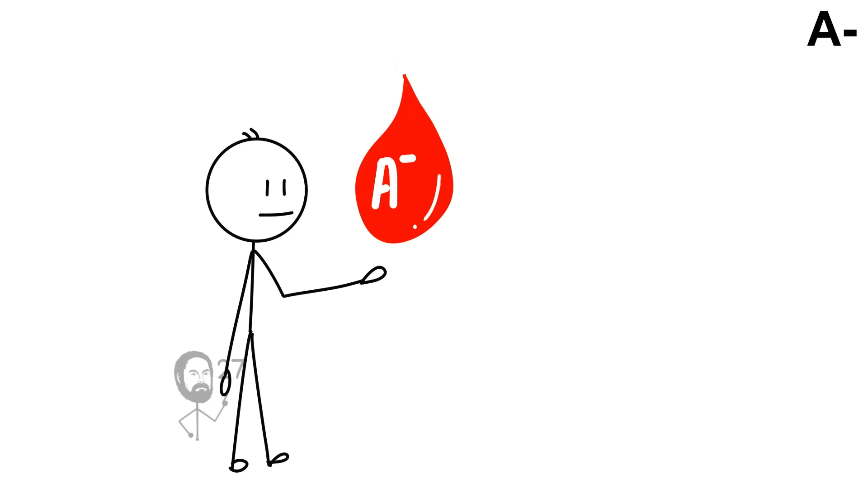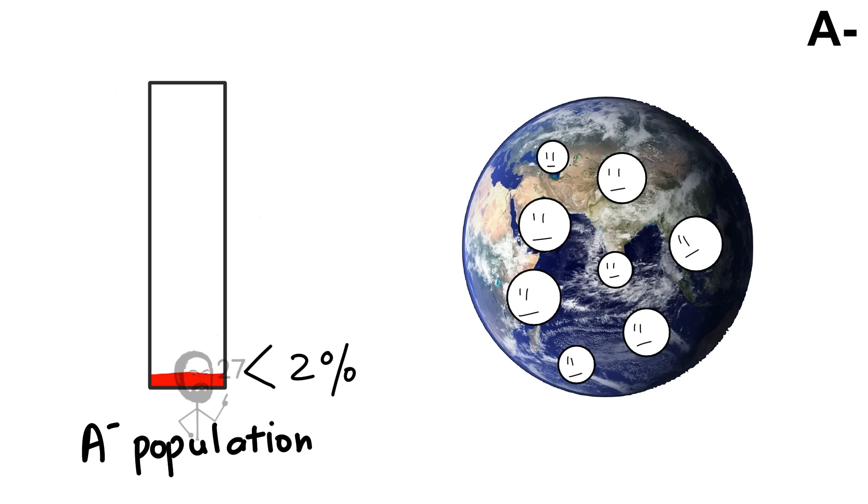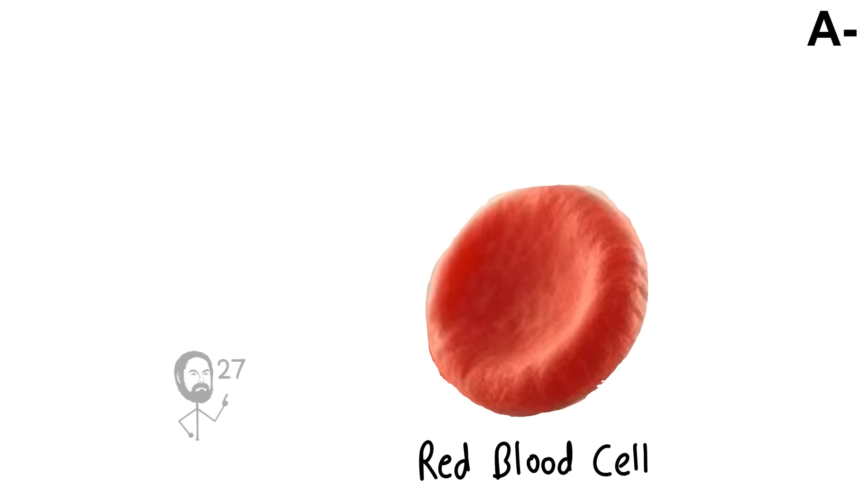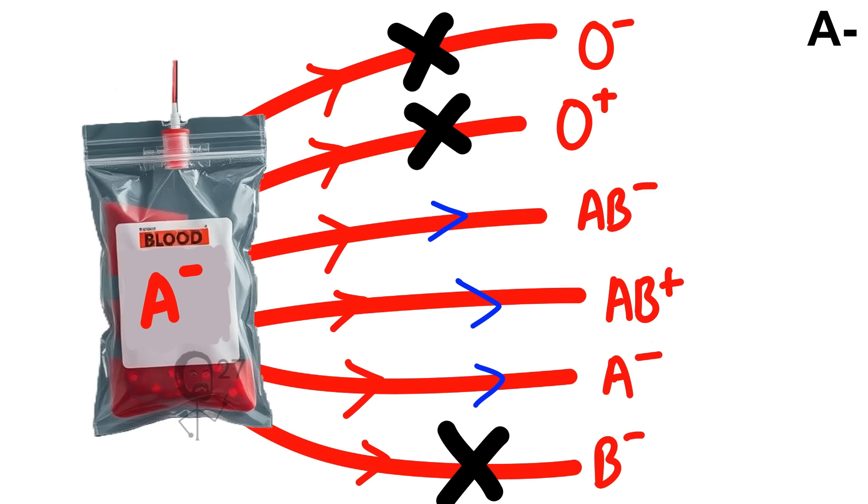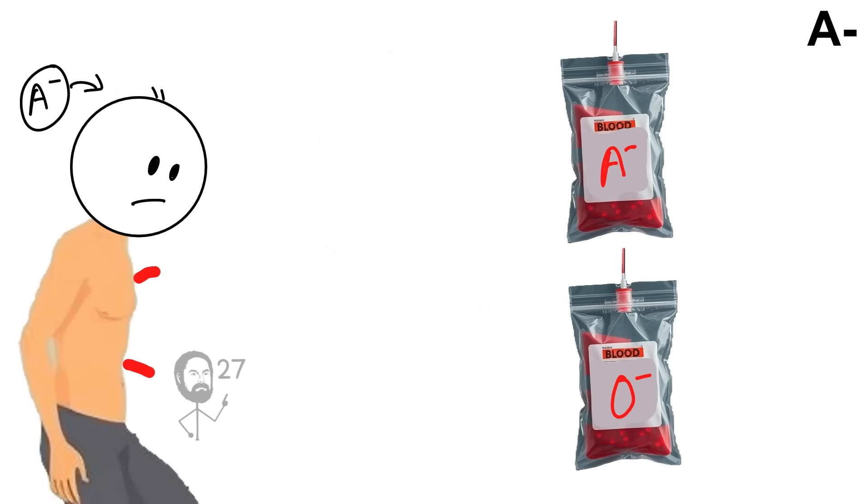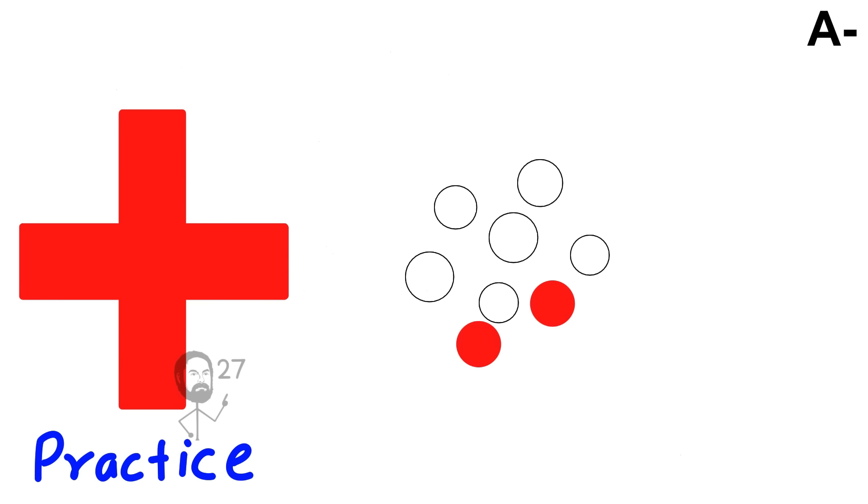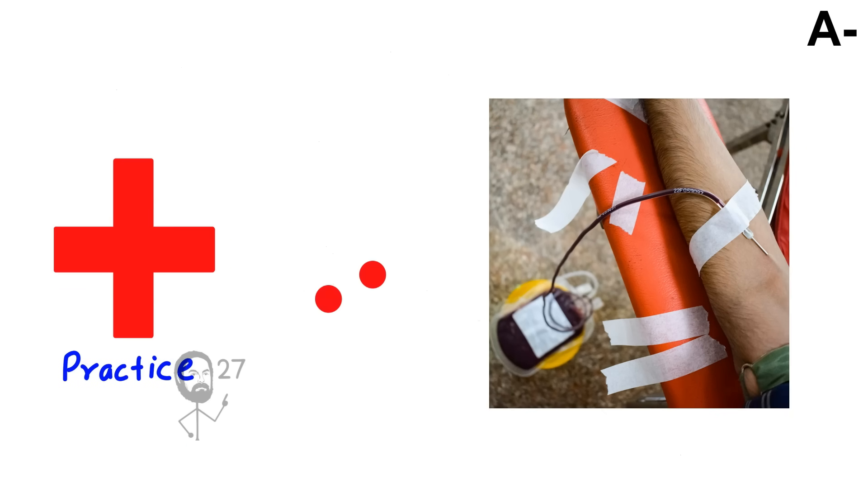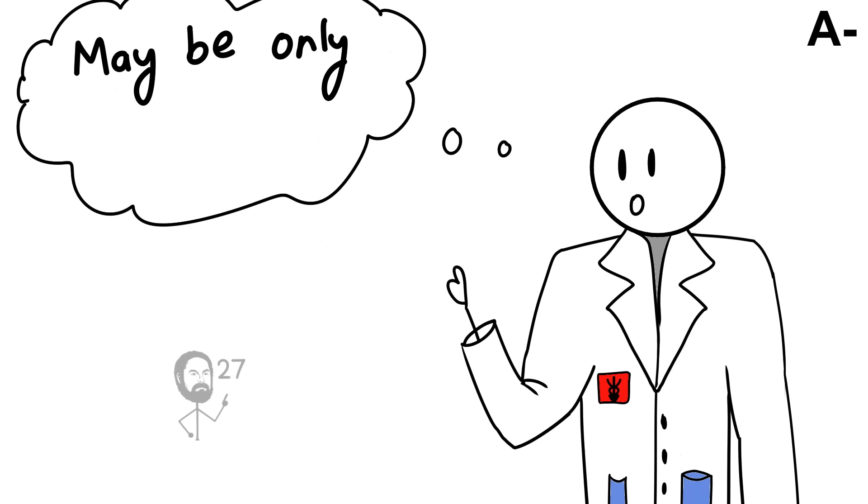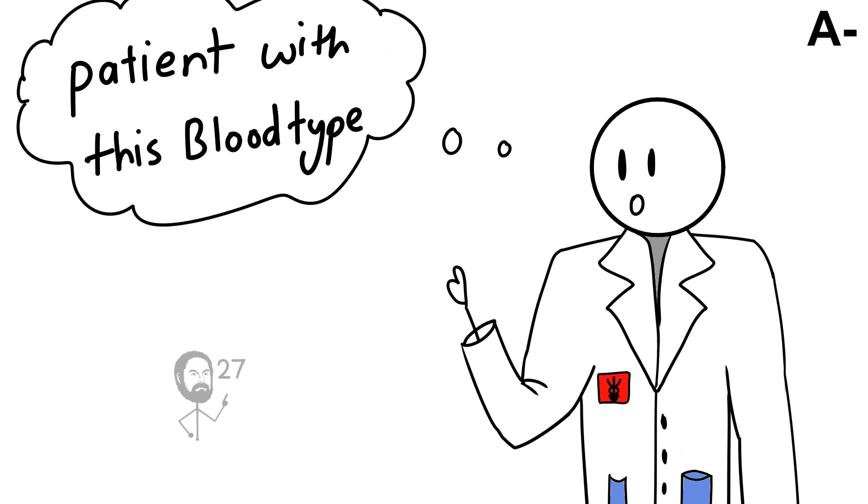A-negative is one of the rarer blood types, present in less than 2% of the global population. Its red blood cells carry the A antigen but lack the RHD factor, which limits compatibility in transfusion. A-negative individuals can safely receive blood from A-negative and O-negative donors only, making their donor pool relatively small. In clinical practice, this scarcity makes every donation of A-negative blood especially valuable, as it may be the only safe option for patients with this type.